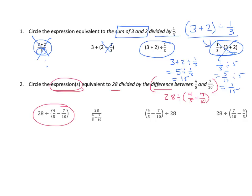There's also a strange-looking one with 28 over a fraction within a fraction. If we interpret that as a division problem, the numerator is the dividend, giving us 28 ÷ (4/5 − 7/10), which is identical to the expression we wrote.